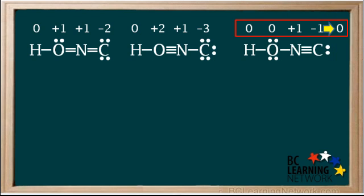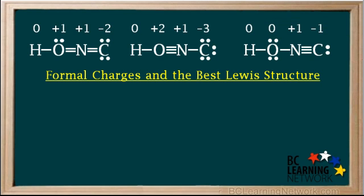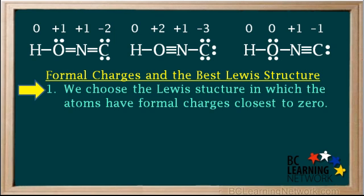Again, the formal charges add up to zero, which is the net charge on this neutral molecule. Now, there are some guidelines chemists follow when determining the best Lewis structure for a molecule or ion. Firstly, we choose the Lewis structure in which the atoms have formal charges closest to zero.